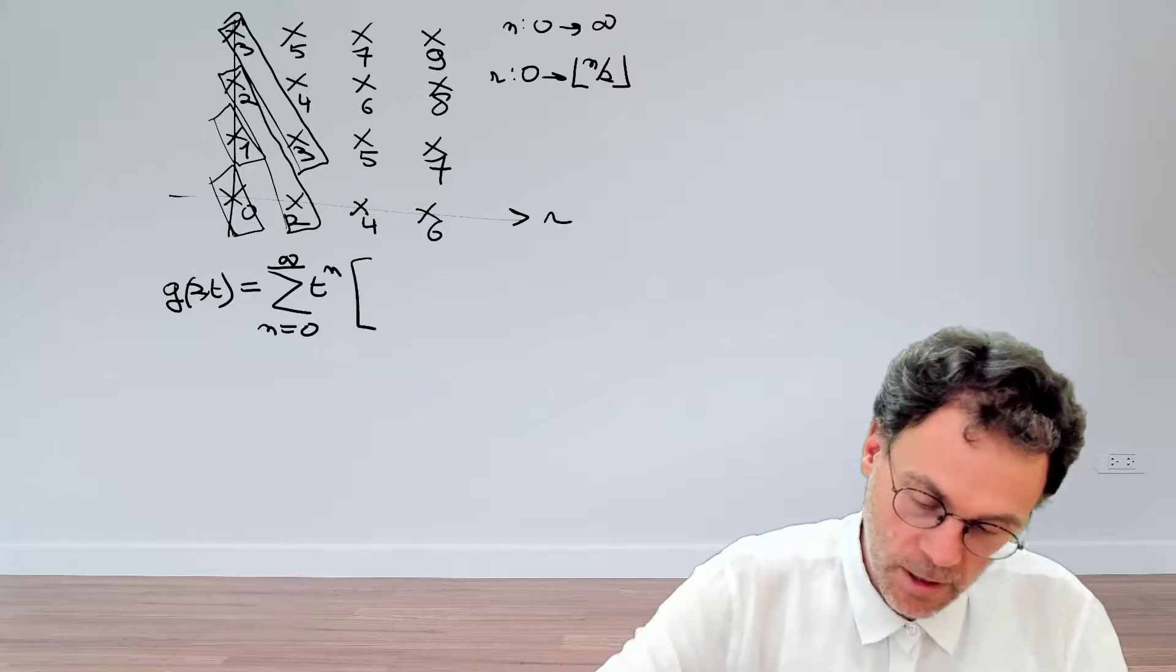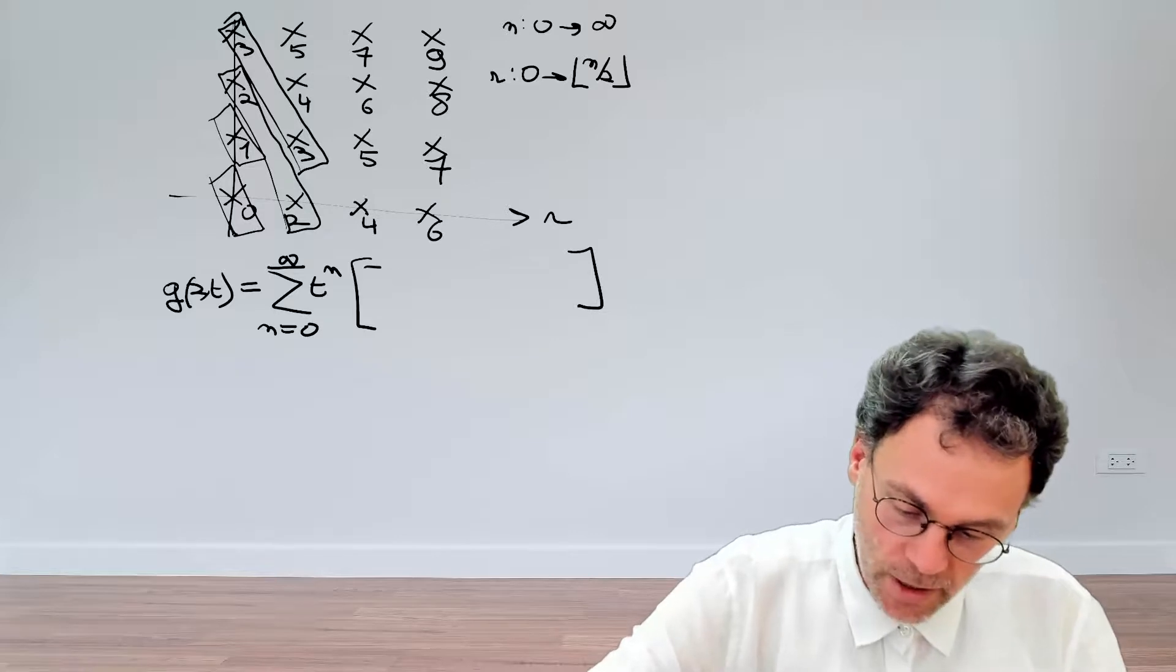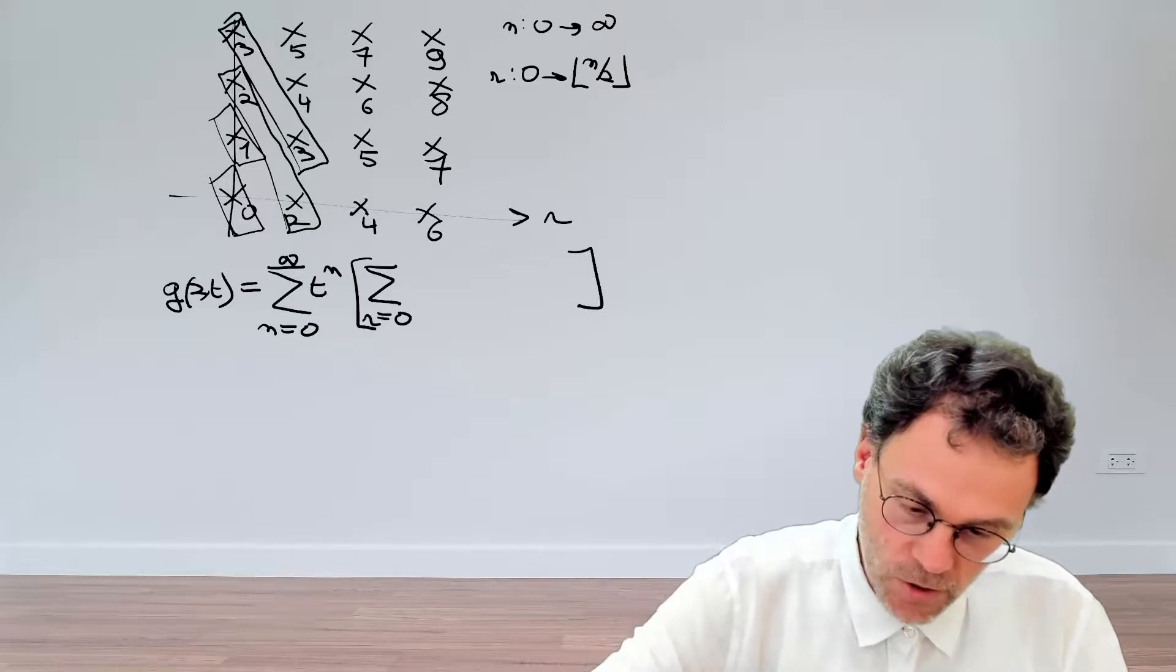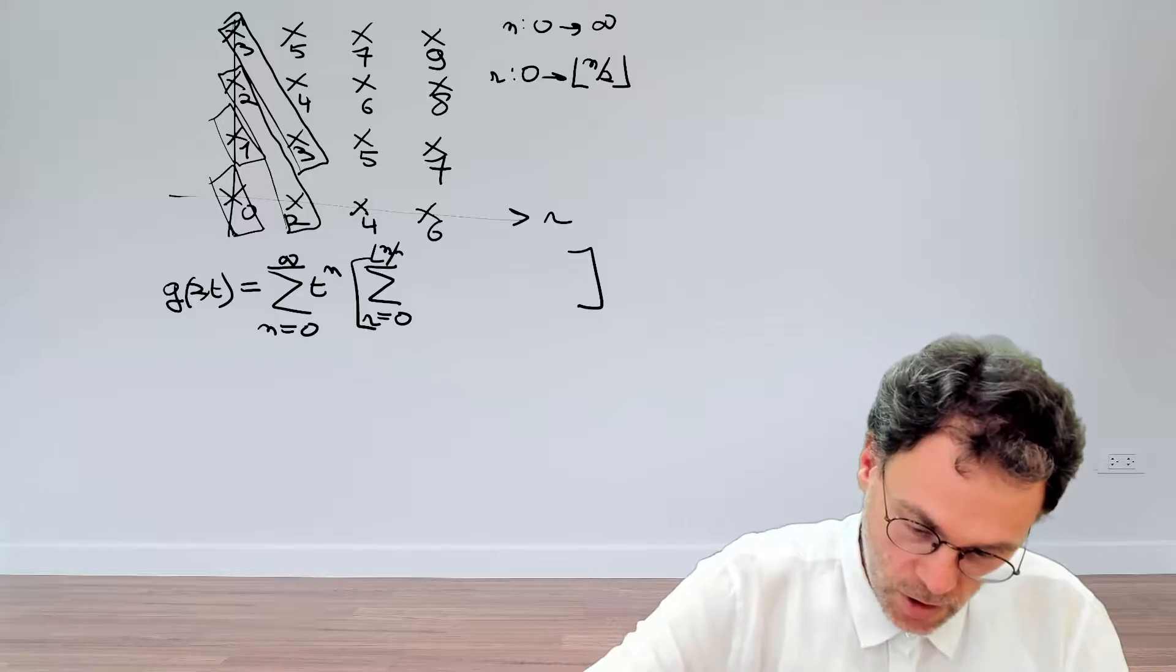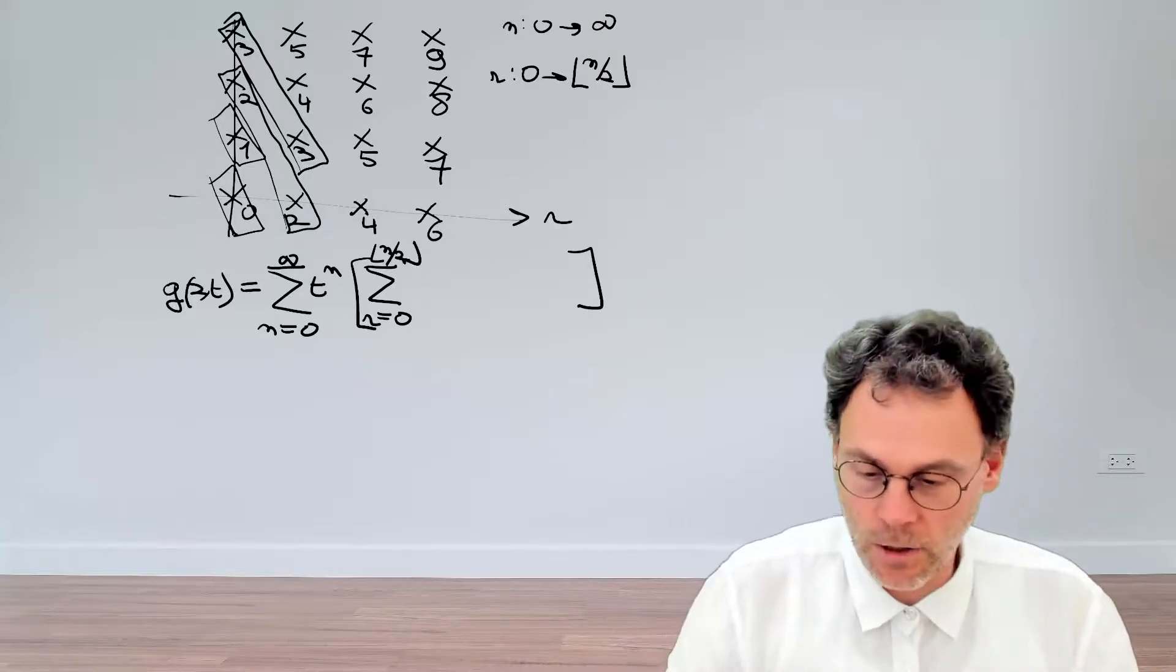and then we have a summation of n running from 0 to infinity, t to the power of n, and then for each value of n, we will have a summation of r running from 0 to this funky upper bound here. So let's collect some terms.